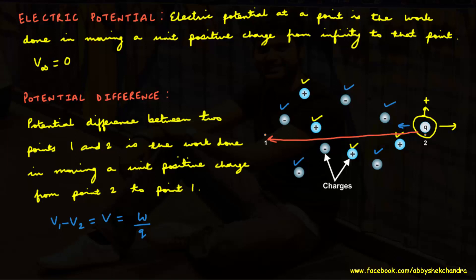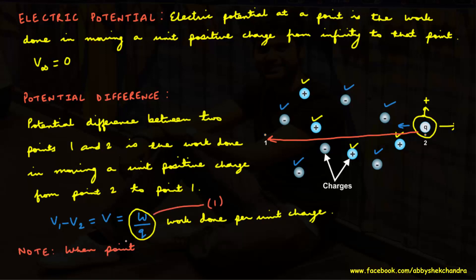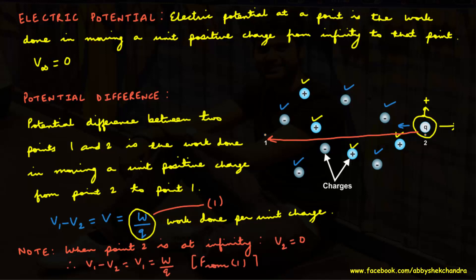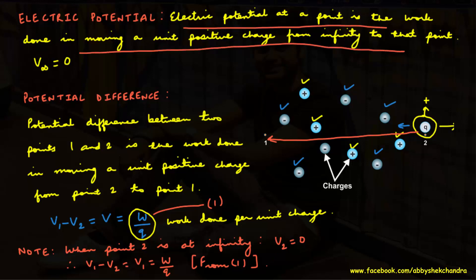Here V1 and V2 are the potentials at points 1 and 2 respectively, and W/q is the work done per unit charge. Note that when point 2 is at infinity, V2 = 0, therefore V1 minus V2 = V1 = W/q, which is consistent with our definition of potential at a point.